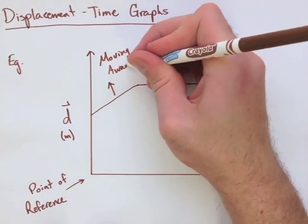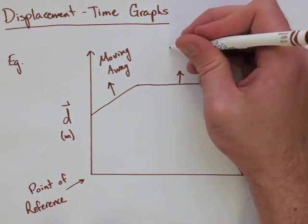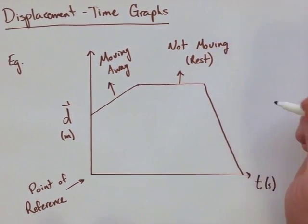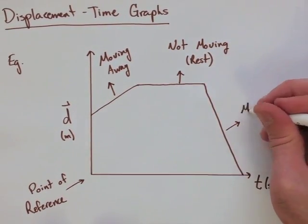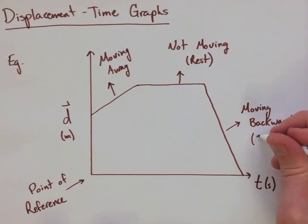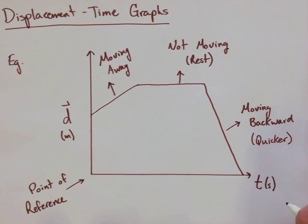In our first part of our graph, we're moving away from that point of reference. In the second point, we're not moving away but we're also not moving forward. We're at rest relative to that point. And then finally we're moving backwards toward the reference point. We're moving a little quicker than we were moving away from it earlier.